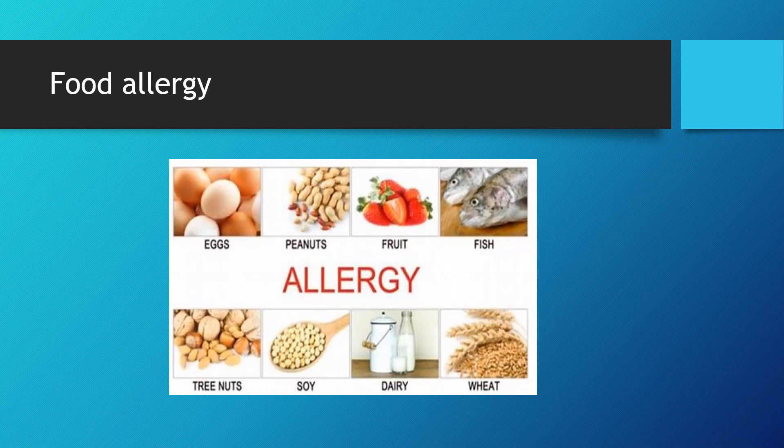Last but not least is food allergy — very important since we eat every day and may unknowingly consume foods we are allergic to. Common food allergens include eggs, peanuts, certain fruits, sea fish and the chemicals they emit, tree nuts, soy, dairy products, and wheat. These are all types of food allergy. Next class we will study how we can prevent these allergies — prevention, care, and treatment.